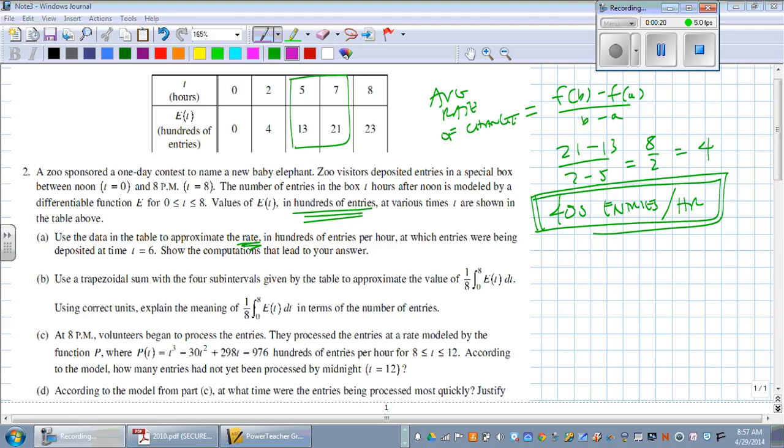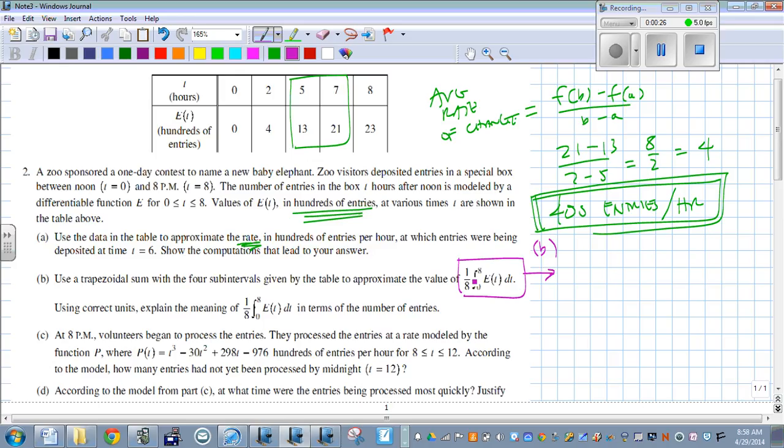Before we even figure it out, let's explain what this means. What is this formula if we have this 1/8 over the definite integral from 0 to 8 of our function? We did average rate of change up here, right? But that's okay because that reiterates the point I made yesterday. These two formulas get mixed up all the time. Average rate of change is just like the slope between the endpoints.